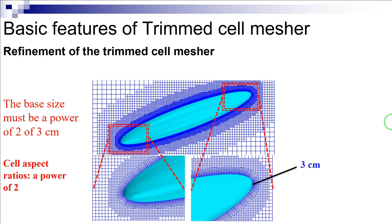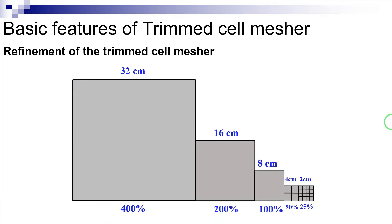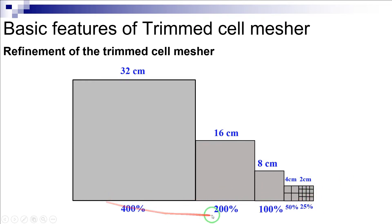Therefore, it is good practice that you use the base size as a reference value to define all the mesh sizes in your domain. For instance, consider that 8 centimeters is the base size value. Then you can set the other sizes by multiplying the base size by multiples of 2 or dividing the base size value by 2, 4, 8. This allows you to refine or coarsen your mesh using only a single parameter, which later facilitates the grid convergence study.